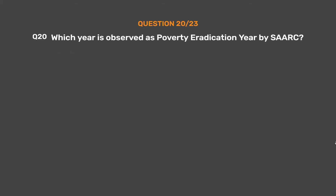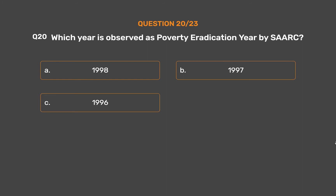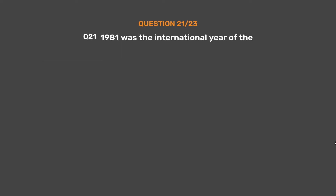Question No. 20. Which year is observed as the poverty eradication year? Option A, 1998; Option B, 1997; Option D, 1995. The correct answer is Option D, 1995.